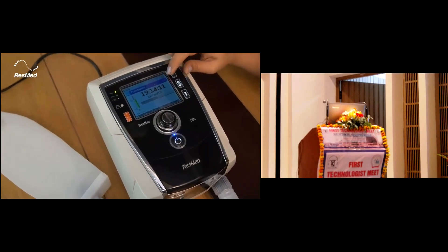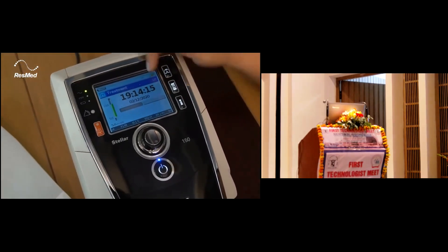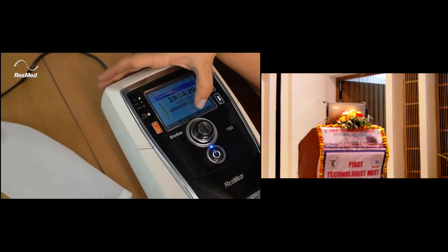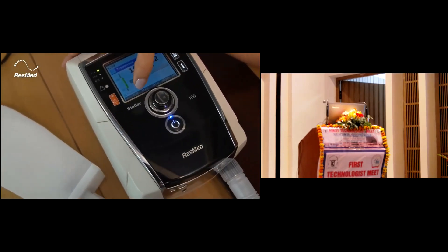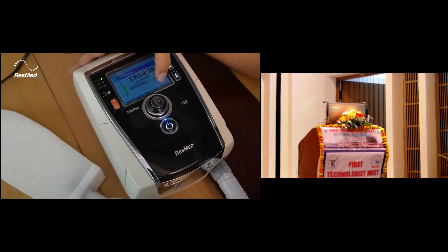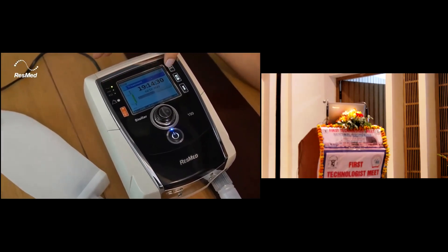Coming to the monitoring menu, you have 1 out of 8 pages. In the first page, you can see not only the pressure bar but also in the bottom bar, you can see the leak, the RR, the TI, the VT, and the MV at all times. As we go from one monitoring display to the other, there are 8 displays.